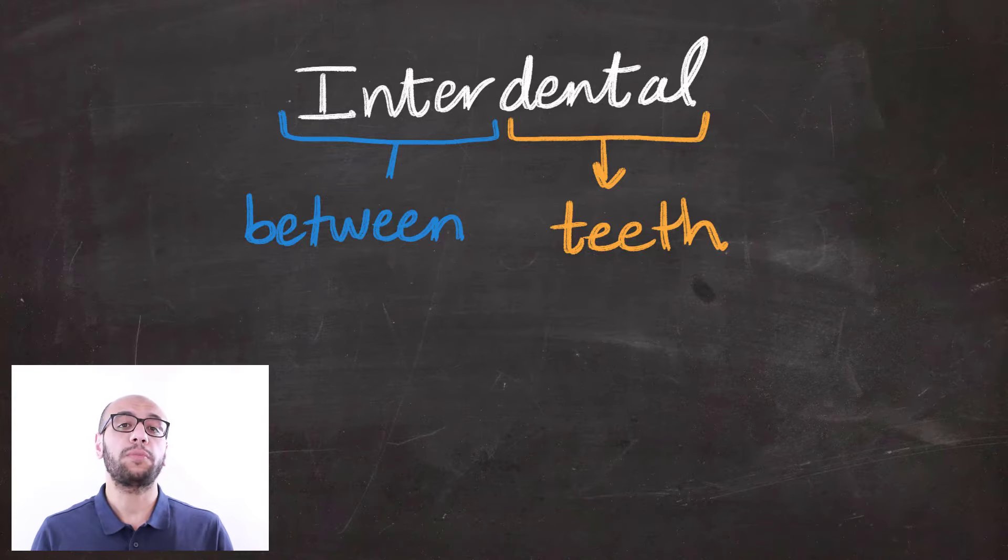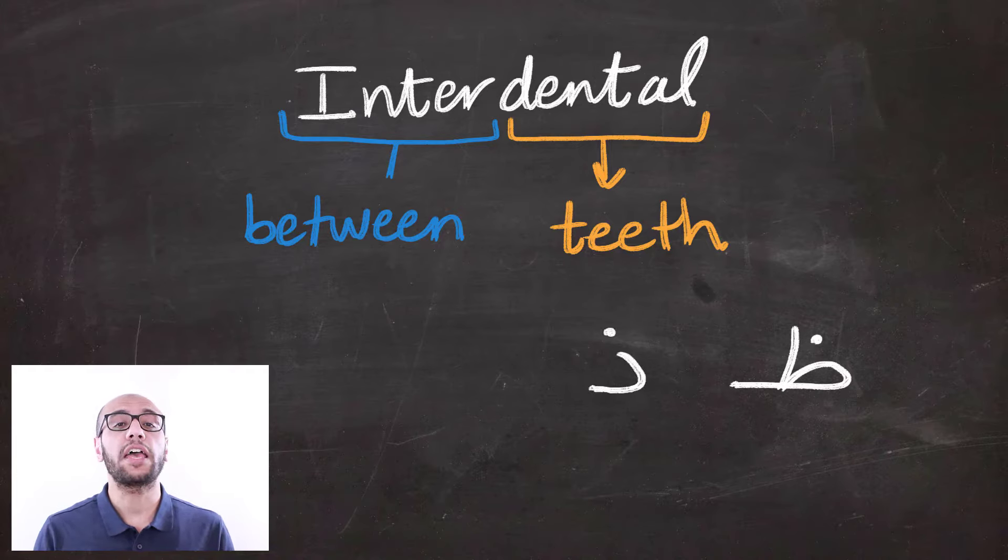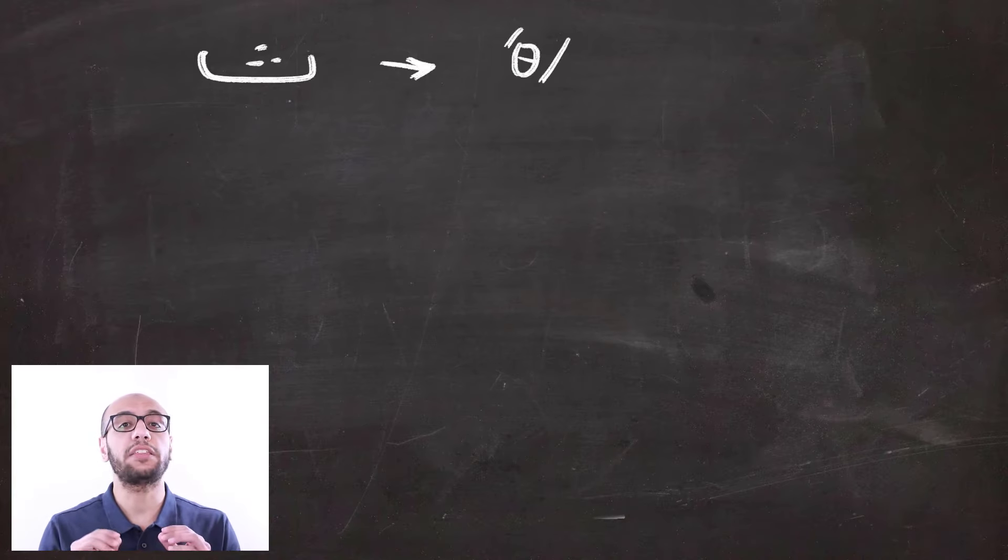The sounds that we're going to be talking about today are th, th, and th. We're going to be starting with the easier one of the three, and that is the th sound.